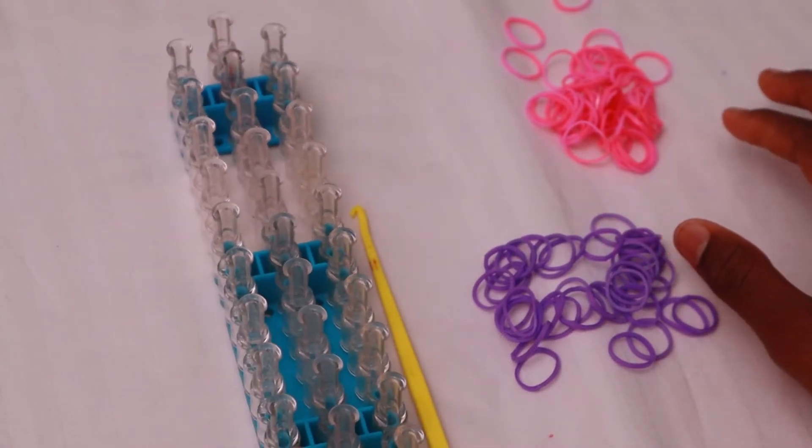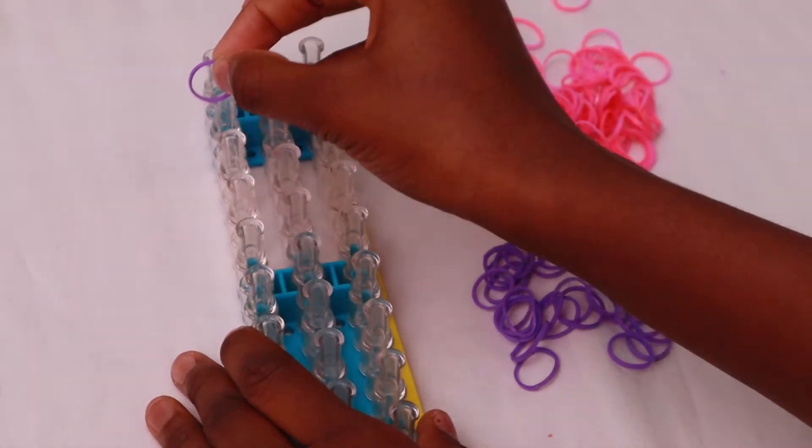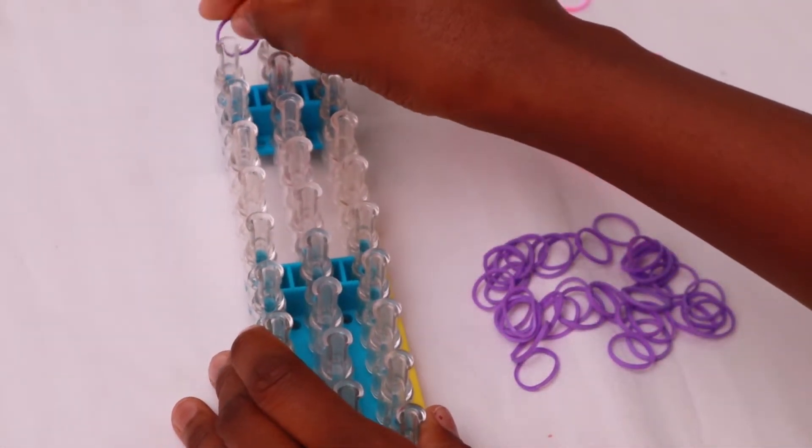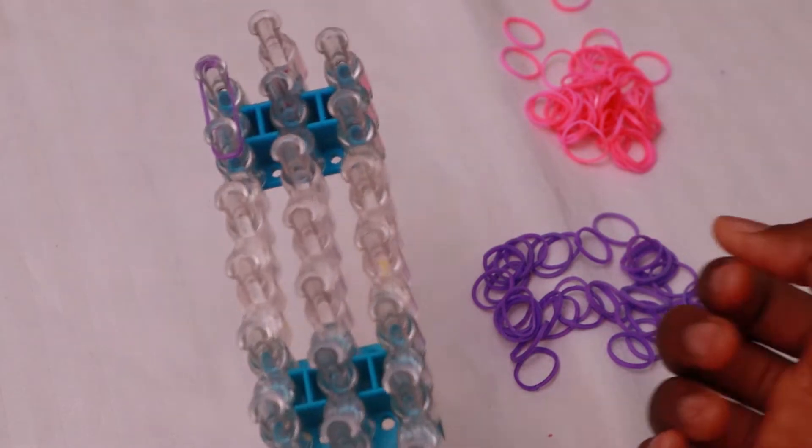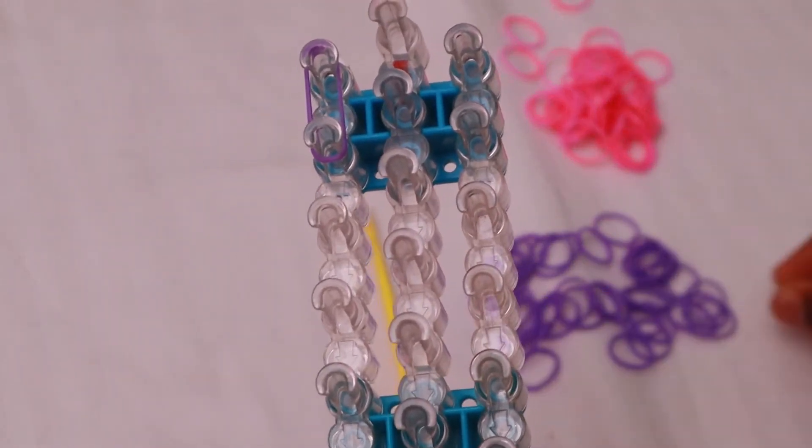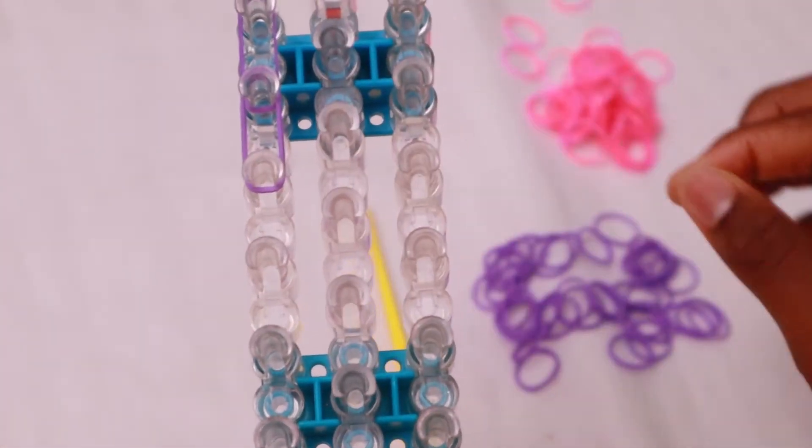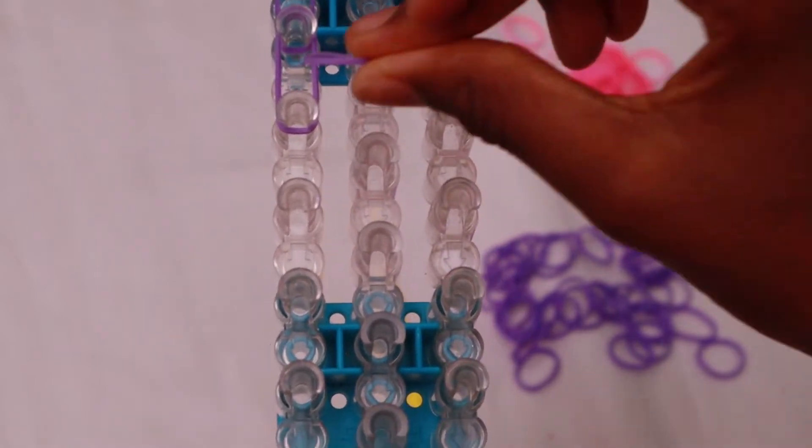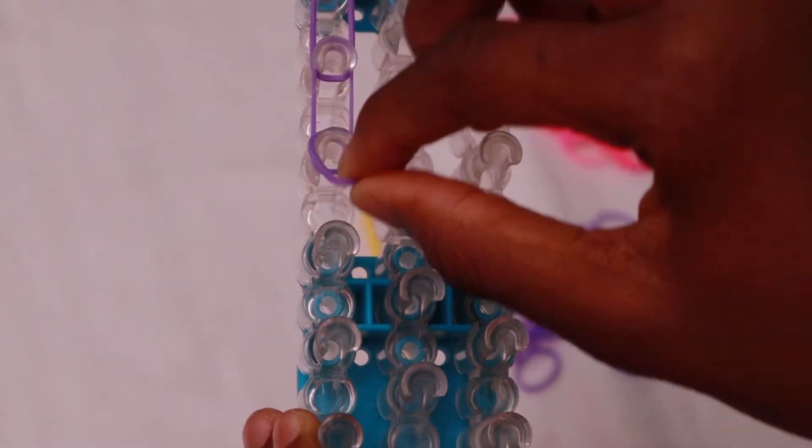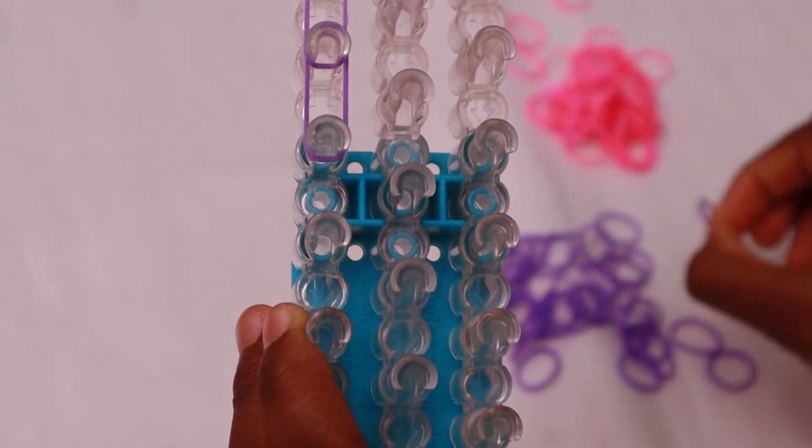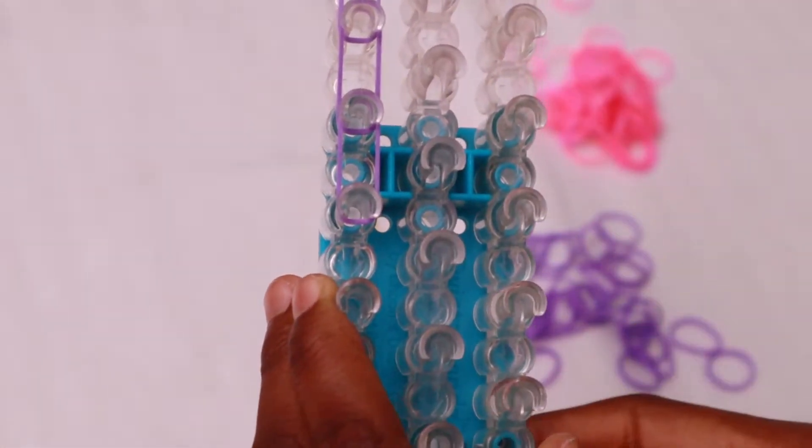Okay, so which color should I start with? Let's start with purple. So I'm going to pick the purple rubber and put it on this first pin to the next, from this pin to this pin, from this pin to this pin. So you're just going to repeat the same process I just showed you guys.